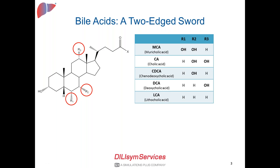Each bile acid has a different number of hydroxyl groups at different locations. Some bile acids, like muricholic acid, which is very abundant in rodents, have three different hydroxyl groups at different locations. As you go down the list, you see fewer hydroxyl groups, which makes those bile acids more hydrophobic. Each different bile acid has different characteristics based on their physicochemical properties.